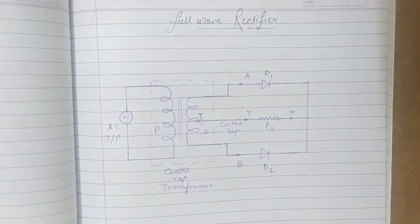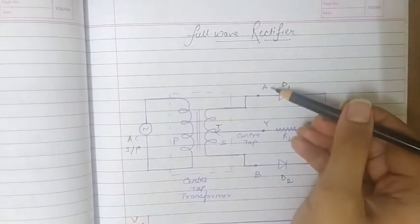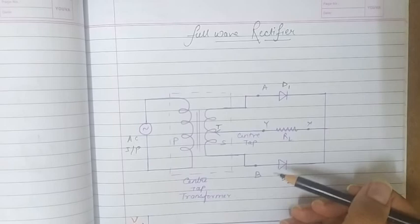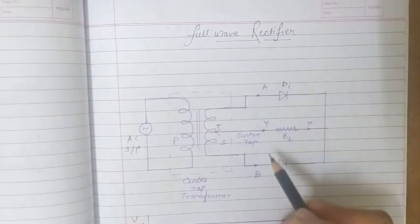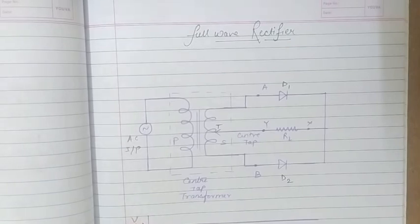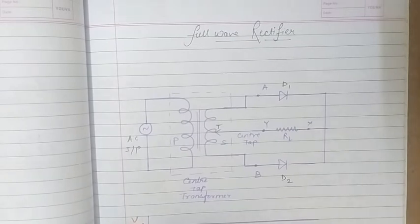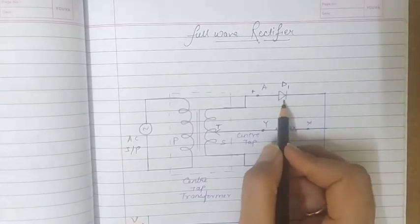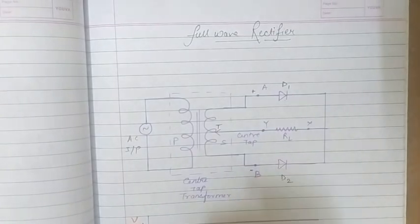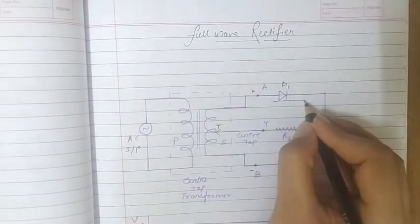At any instant, the voltages at points A and B - the ends connected to D1 and D2 - are out of phase with respect to the center tap. During the positive half cycle of AC input, A is positive and B is negative with respect to the center tap. Therefore diode D1 is forward biased (P connected to positive) and diode D2 is reverse biased, so we get current due to D1 only.